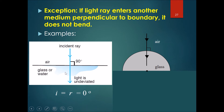This occurs when the angle of incidence is zero. If the angle of incidence is zero, the angle of refraction is also zero. If light hits perfectly at 90 degrees to the glass surface, it goes straight through without refracting.